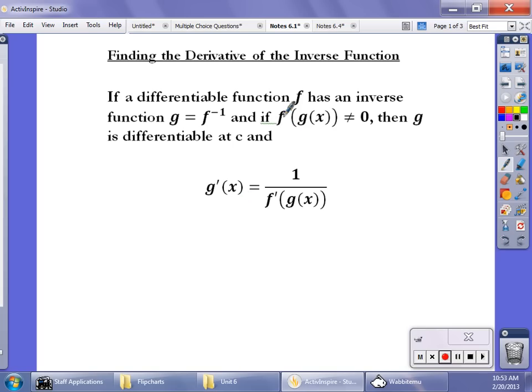f prime of g of x cannot equal zero because we're going to be dividing by it. So if you're looking for the derivative of the inverse function, we don't actually have to find the inverse function. We can apply this relationship, which is just one over the derivative of the original function at the inverse, at the value of the inverse or whatever you're trying to find.